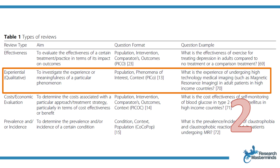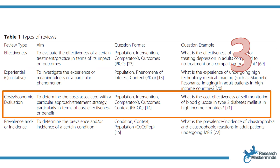Another type is the experiential or qualitative systematic review, which aims to investigate the experience or meaningfulness of a particular phenomenon. For example: what is the experience of undergoing high-technology medical imaging in adult patients in high-income countries? Then there's the systematic review of costs or economic evaluation, to determine the costs associated with a particular approach or treatment strategy, particularly in terms of cost-effectiveness or benefit. An example: what is the cost-effectiveness of self-monitoring of blood glucose in type 2 diabetes mellitus in high-income countries?